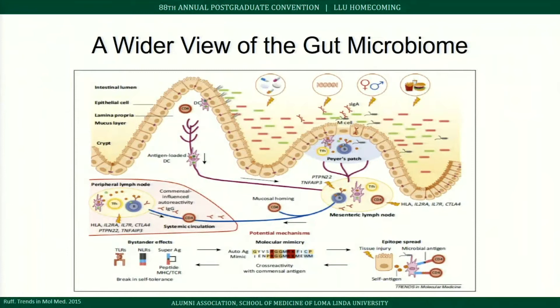Zooming out: if you have a genetic predisposition, a poor lifestyle, little exercise, medications that increase intestinal permeability, and a highly inflammatory diet, those inflammatory cytokines can spread via lymph nodes and systemic circulation to different parts of the body. Combined with decreased immune tolerance, molecular mimicry, and epitope spreading, this is a recipe for autoimmune disease.